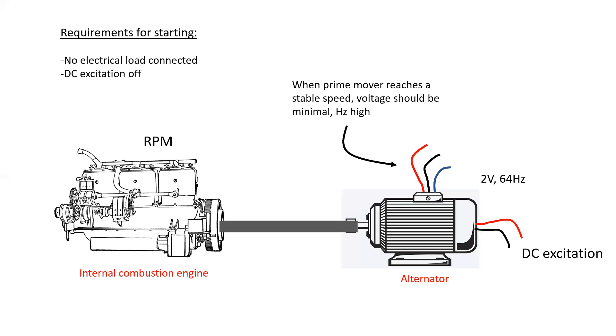When the prime mover reaches a stable speed, voltage should be minimal, and the hertz may be a bit high. After this, the field coil can then be energized with the DC voltage.